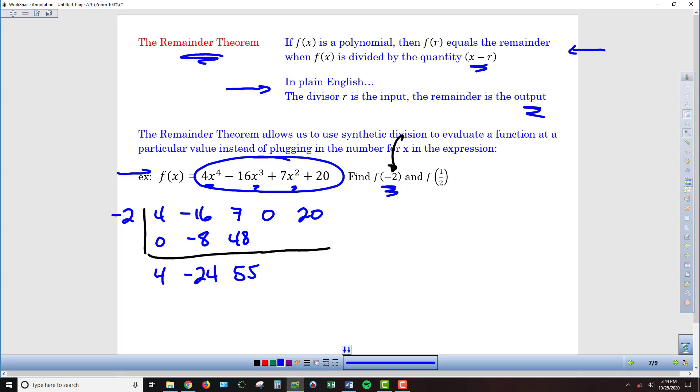Multiply on the diagonal, negative 2 times 55 is negative 110. Add in the vertical direction, 0 plus negative 110 is negative 110. And we have one more multiplication, negative 2 times negative 110 gives us 220. Then we add in the vertical direction, 20 plus 220, 240.